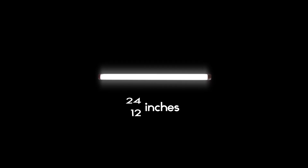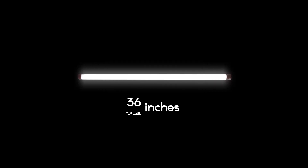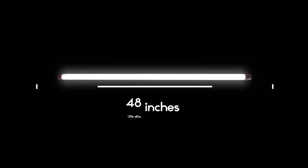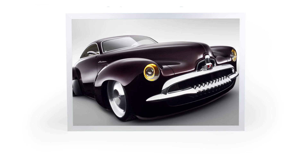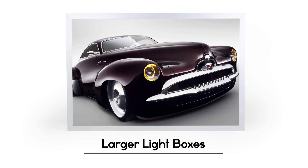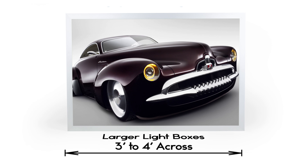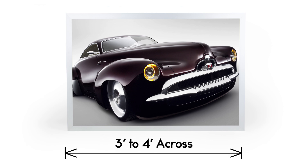Also, consider the size of your light boxes. The longer the fluorescent lamps in your light boxes are, the more easily they can break on impact. So if your light boxes are really large — say over three or four feet across — you may want to favor LED lamps for their durability.